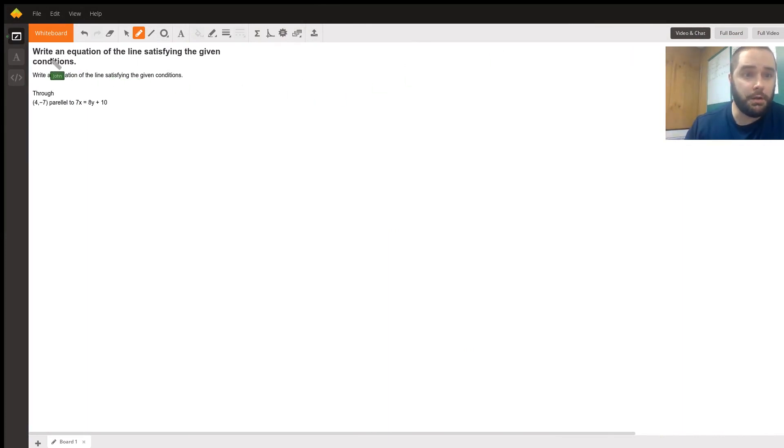Alright, so your problem says to write an equation of the line satisfying the given conditions. It goes through the point (4, -7) and is parallel to 7x = 8y - 10.